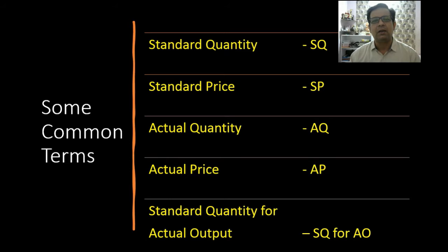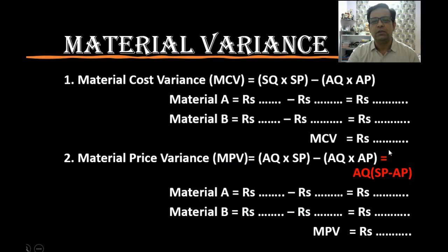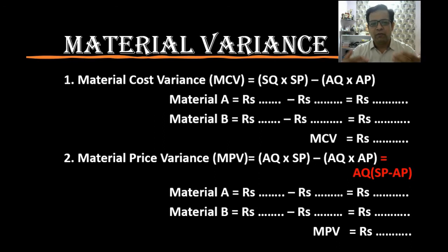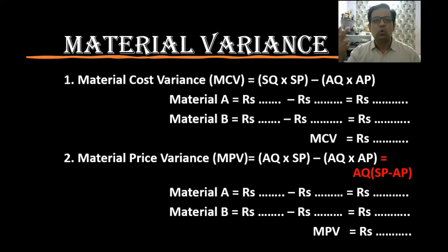These are the terms we will use repeatedly in our formulas. Knowing them now will help us understand the formulas better. There are five material variances to remember, each with a different formula. For the first two formulas you can see material A and material B on the screen, based on the assumption that more than one input material is needed to produce one unit of finished goods.